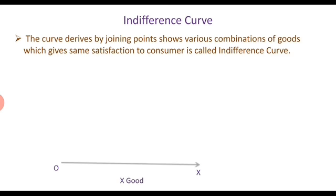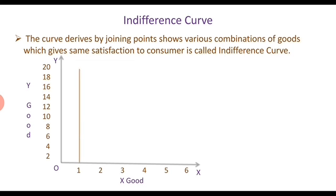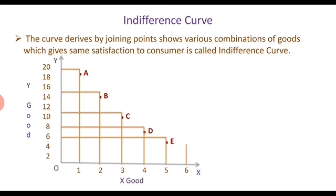In the diagram, X good is shown on the X axis and Y good is shown on the Y axis. In combination A, X good is 1 and Y goods are 20. In combination B, X goods are 2 and Y goods are 15. By joining all points of combinations A, B, C, D, E, and F — the same satisfaction-giving combinations — we can derive the indifference curve. In this diagram, IC1 is the indifference curve.